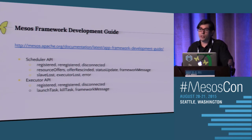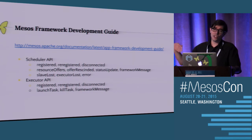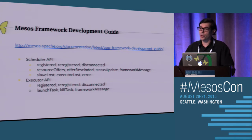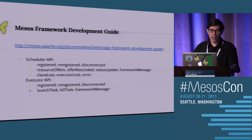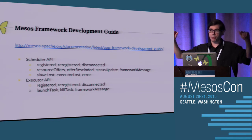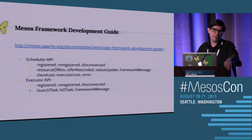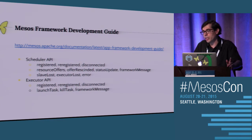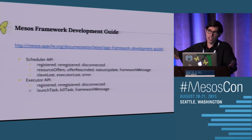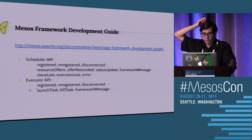There's status updates - when an executor launches, you have to say task running, and that will be a status update, so the scheduler knows what's going on with all the different executors. Then there's framework message - I've honestly never really used it; there's a big disclaimer that it may not be reliable. I've generally gone with the approach of just opening a socket so the executors can talk to the scheduler directly. And of course, slave lost, executor lost, and any errors - these are all callback functions. On the executor side it's the same: register, re-register, disconnected, and launch task.